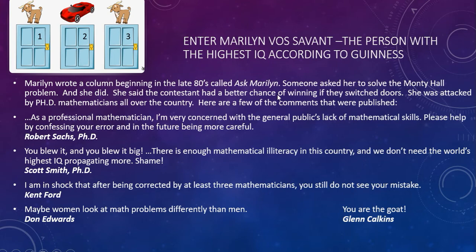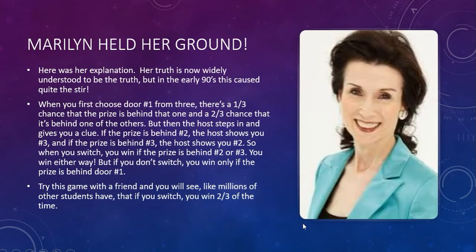Marilyn was the smartest person in the world — the world's highest IQ — and she did not fold easily to people even when they were being very mean to her. She held her ground. Her truth is now widely understood to be correct, but in the early 90s this caused quite a stir. It turns out millions of people had their students pretend to be Monty Hall, did the experiment, and started seeing she was right.